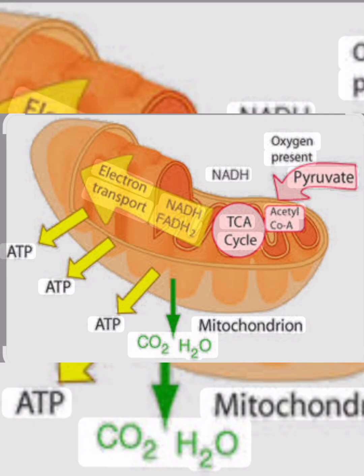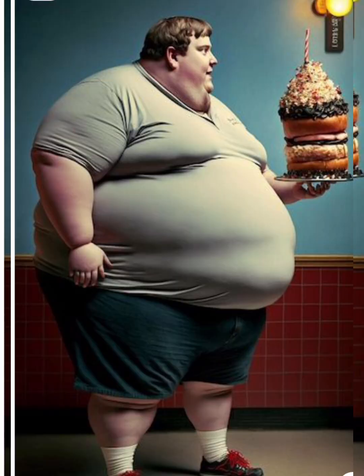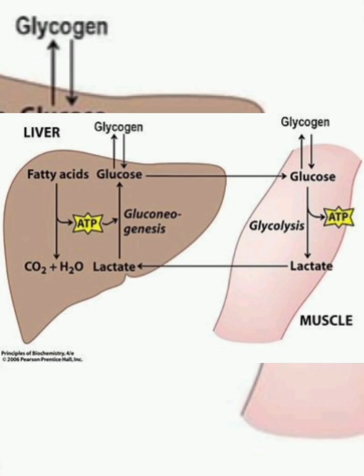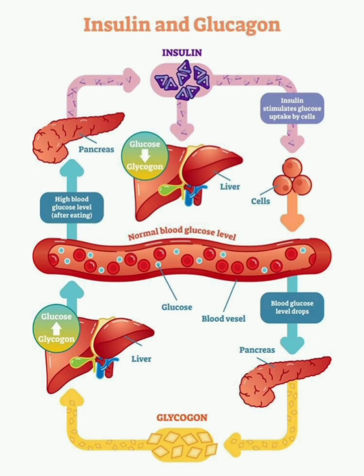When you have some extra food, it still gets converted into glucose. The extra glucose that is produced gets converted into glycogen and gets deposited in the liver.